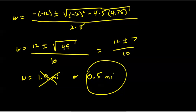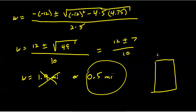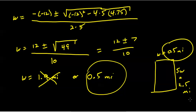They want us to find the dimensions of Central Park — both length and width. If the width is 0.5 miles, then the length is five times that: 5W = 2.5 miles. So the final answer is 0.5 miles by 2.5 miles. And if you've ever been to Central Park, you'll see that jives with what you might see walking around the park. That concludes Section 8.2, the quadratic formula.